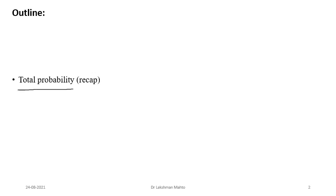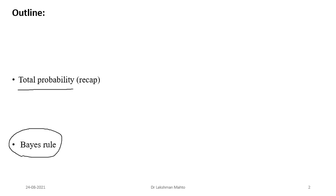The outline of today's lecture: first I will talk about a few examples from total probability that we discussed in the last class, and after that I will talk about Bayes' theorem. I will give one statement of Bayes' theorem and how it is influenced by conditional probability and total probability. It is talking about the association between cause and effect — if there is some kind of effect you observe, you try to find out what is the probability of the cause due to that effect.